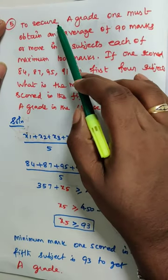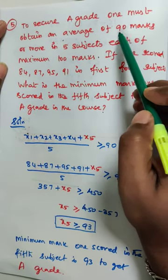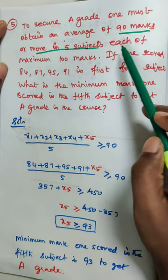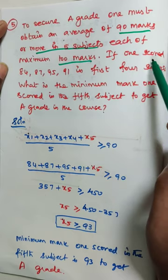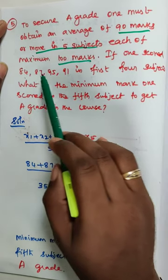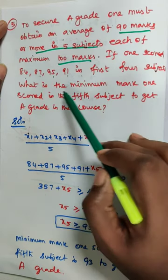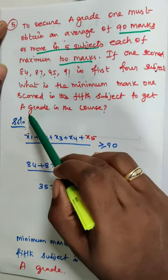To secure a grade, one must obtain an average of 90 marks or more in 5 subjects, each of maximum 100 marks. If one scored 84, 87, 95, 91 in first 4 subjects, what is the minimum mark one scored in the 5th subject to get a grade?